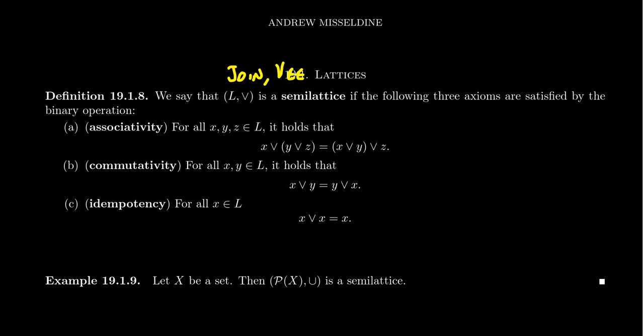Our second axiom is commutativity — slightly different from what we did with groups. For any elements X and Y inside the set L, we require that X join Y equals Y join X. We're building commutativity into the structure. For groups, being commutative was optional — you'd get an abelian group. But for semi-lattices, commutativity is required. That's not too alien since we did study a lot about abelian groups.